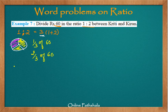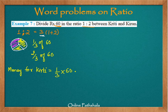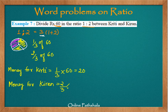Simplifying these: money for Kirti is 1 third of 60, which gives us 20. So we give 20 rupees to Kirti. Money for Kiran is 2 thirds of 60, which equals 40. If you take the ratio 20 to 40, it is in the ratio of 1 is to 2.